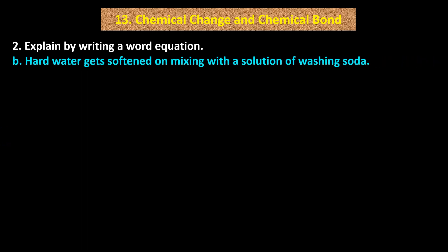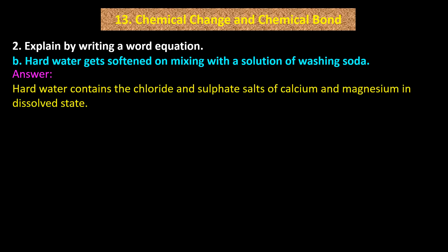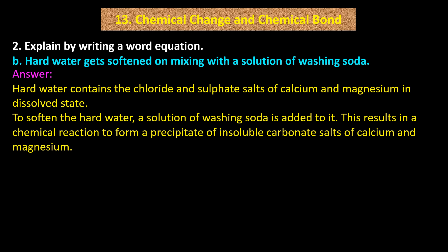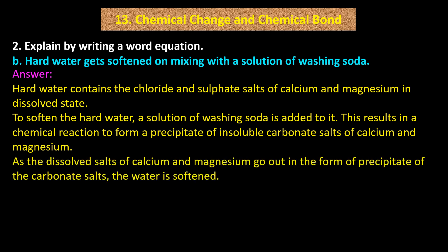B: Hard water gets softened on mixing with a solution of washing soda. Answer: Hard water contains the chloride and sulfate salts of calcium and magnesium in dissolved state. To soften the hard water, a solution of washing soda is added to it. This results in a chemical reaction to form a precipitate of insoluble carbonate salts of calcium and magnesium.